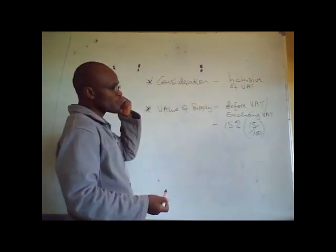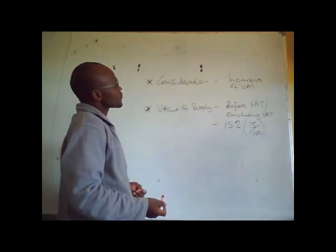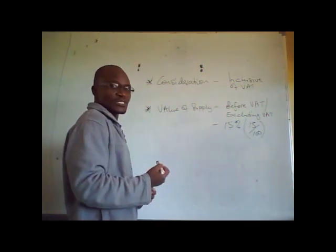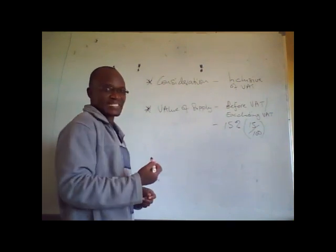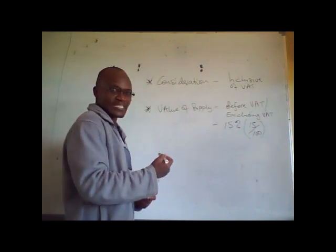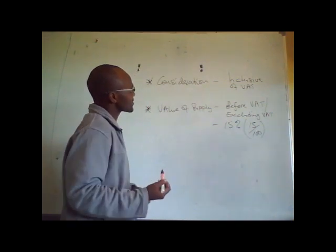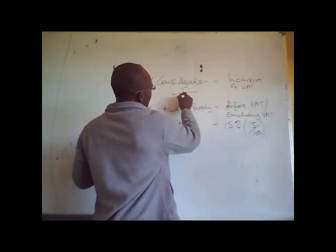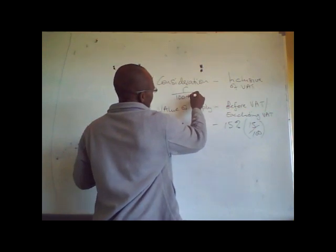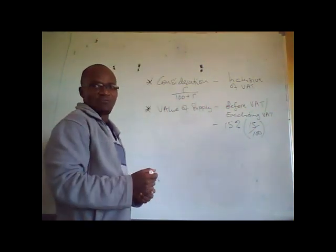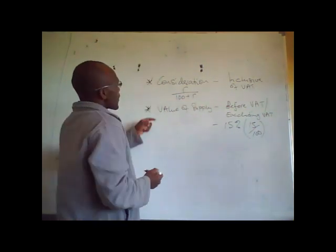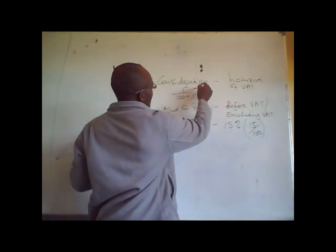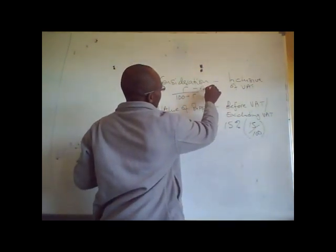When you are dealing with a consideration, there is what is called the tax fraction, and that is the one which is used to extract VAT from a consideration. The tax fraction is R over 100 plus R, where R is the rate of tax.